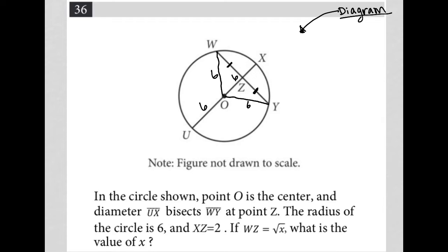So the radius of the circle is 6. XZ is equal to 2. Okay, so that means this is 2, which means then that from Z to O is 4.